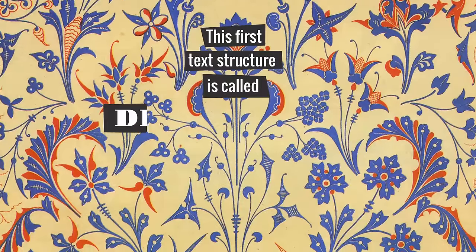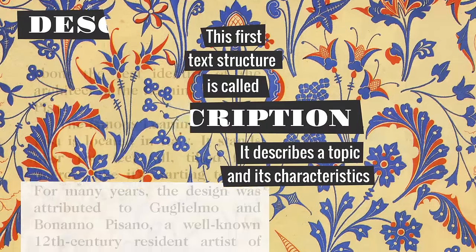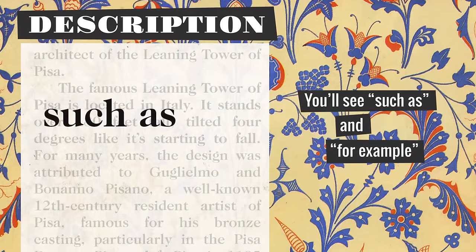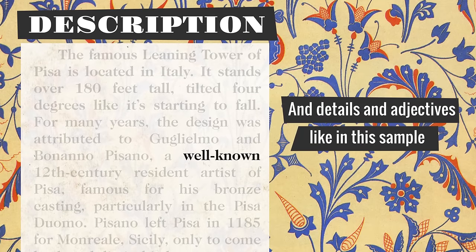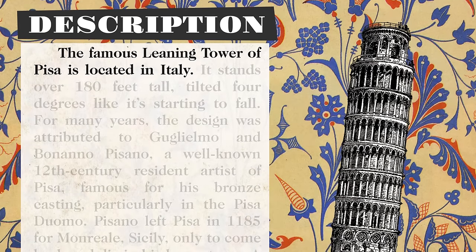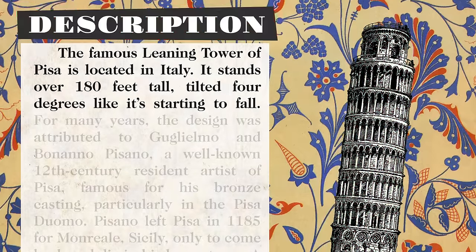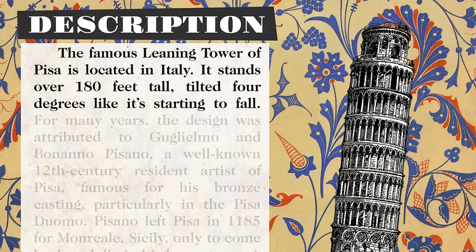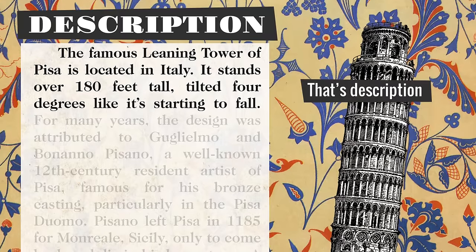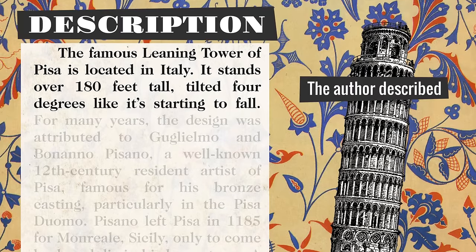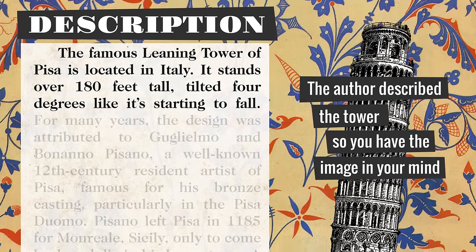This first text structure is called description — it describes the topic and its characteristics. You'll see words such as, for example, and details and adjectives, like in this sample: 'The famous Leaning Tower of Pisa is located in Italy. It stands over 180 feet tall, tilted 4 degrees like it's starting to fall.' That's description — the author describes the tower so you have the image in your mind.